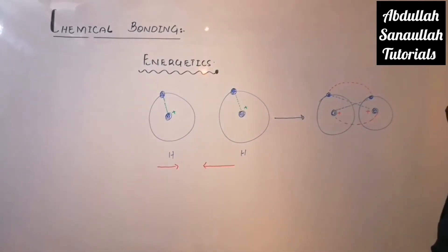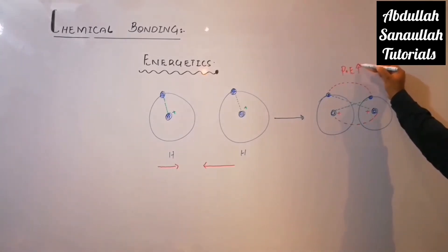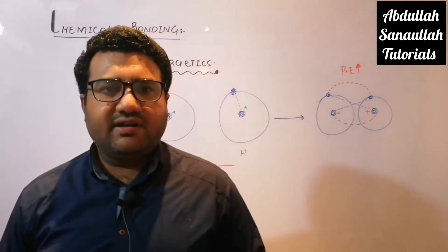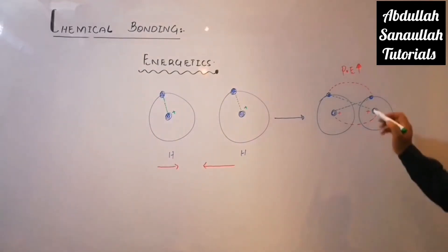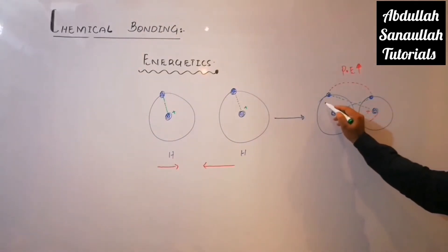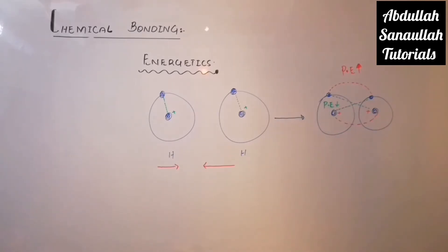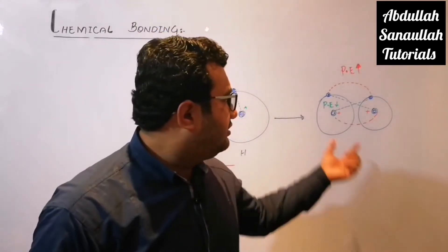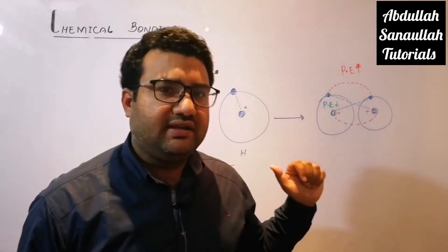Due to the repulsive forces — shown in red — the potential energy increases. In chemistry, potential energy is not due to position, but it is due to the forces of attraction and repulsion. Because of forces of attraction, the potential energy will decrease. But because both forces are balanced — two attractive and two repulsive — there will be no net change in potential energy.